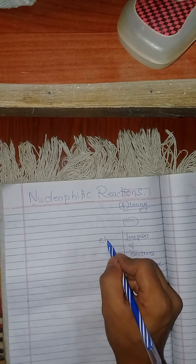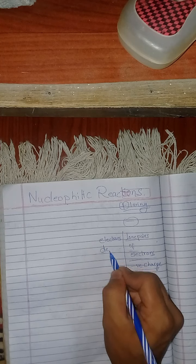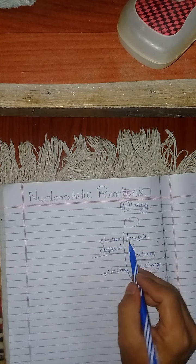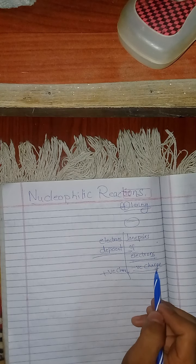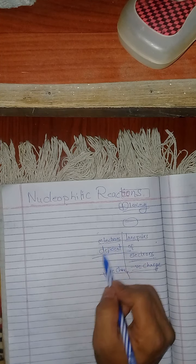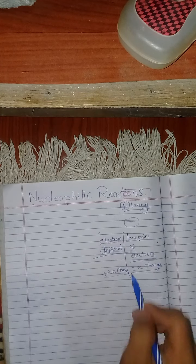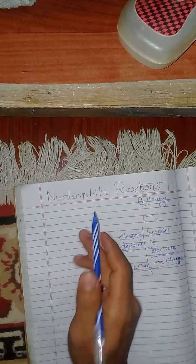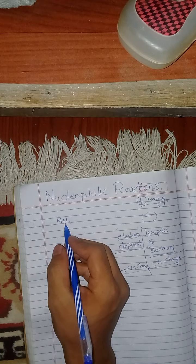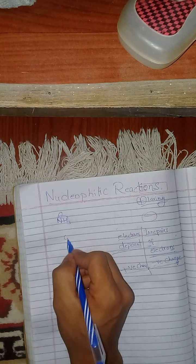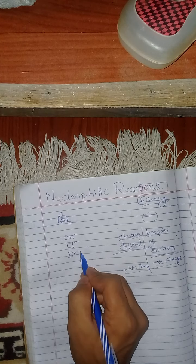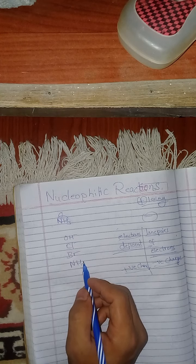Then what is electrophilic? Those species which bear a positive charge or are electron deficient are called electrophiles. Nucleophiles have lone pairs of electrons or negative charge; electrophiles are electron deficient. Examples of nucleophiles include NH3, OH minus, Cl minus, Br minus, and other halide ions.